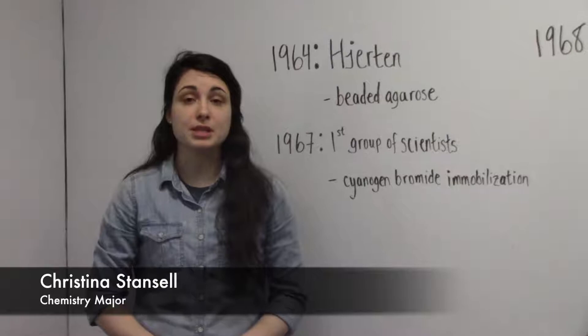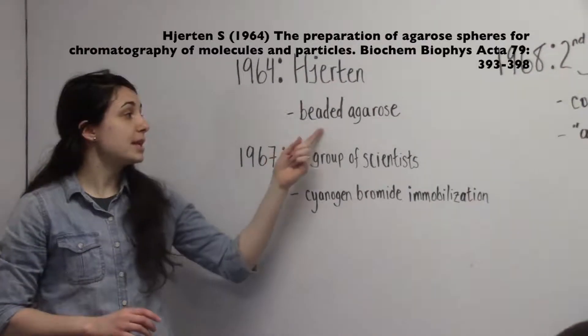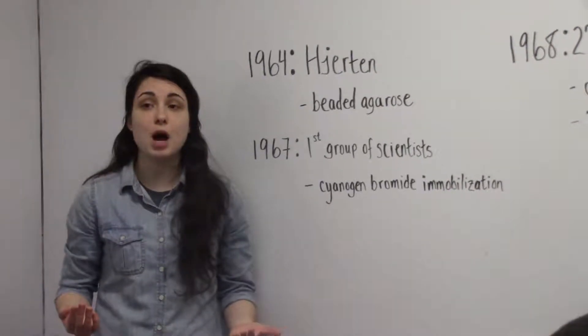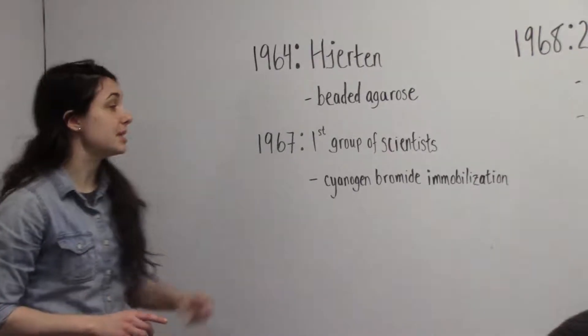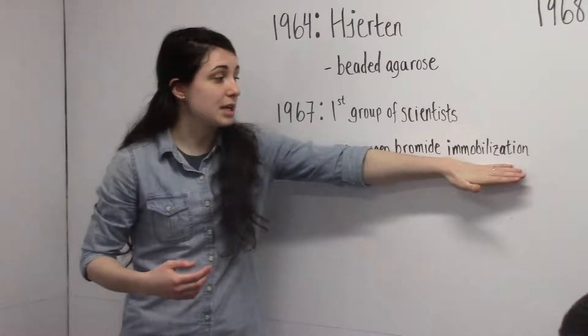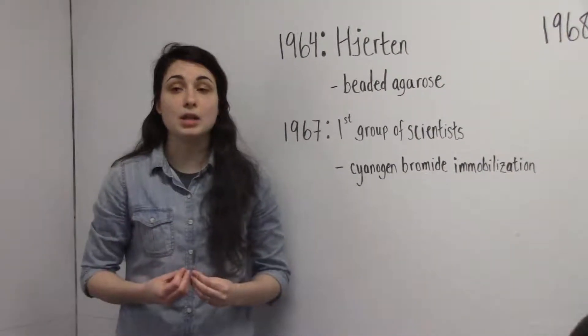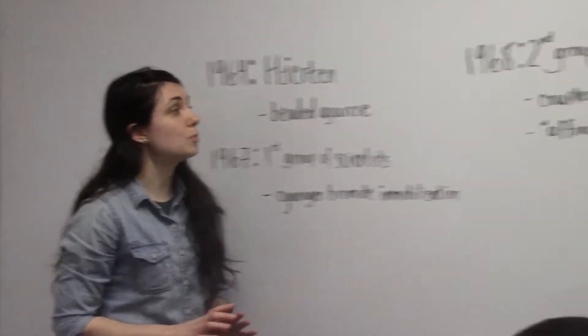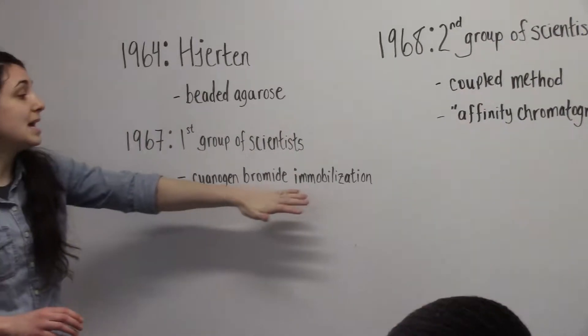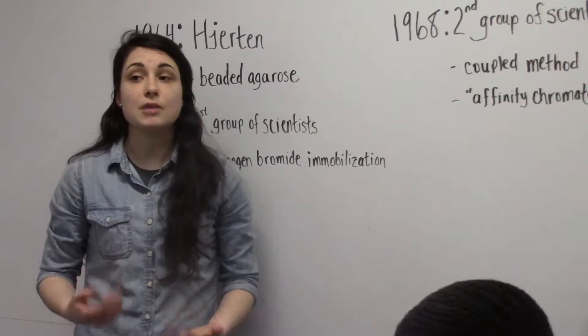The next critical developments occurred in the mid-1960s. One of them was created by Jerton in 1964 with the development of beaded agarose. This was important because this support was more readily adaptable than cellulose when proteins and biopolymers were used for liquid chromatography. The next development happened in 1967 when a group of scientists developed a method known as cyanogen bromide immobilization method. This method allowed for a general and convenient means for combining peptides and proteins to polysaccharide-based materials.